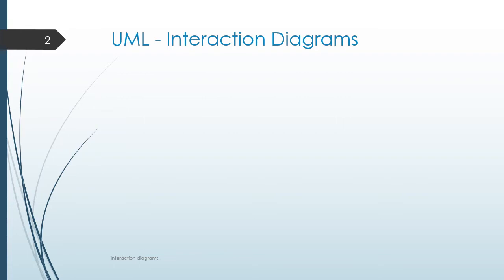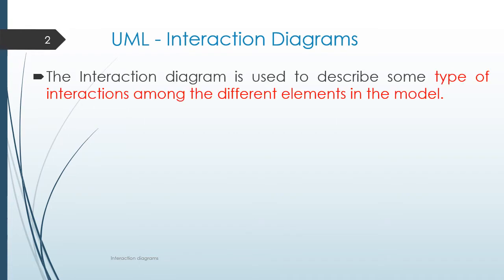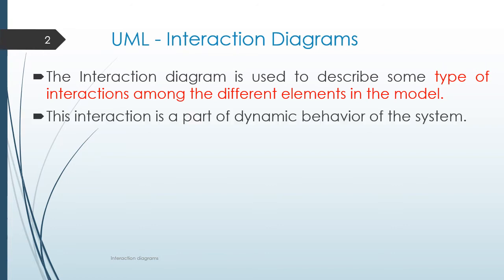What is an interaction diagram and what is the purpose of an interaction diagram? Interaction diagram is used to describe some type of interactions among different elements in the model — one system, software system, non-software system — and the elements of the interactions described using a diagram is an interaction diagram. Interaction diagram represents the dynamic behavior of the system, whereas a plot diagram represents the static behavior of the system.